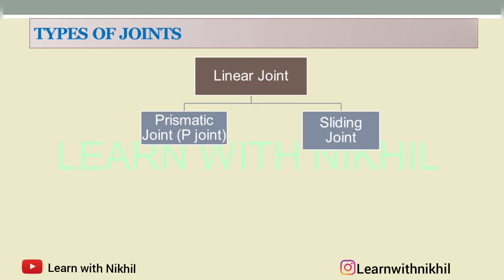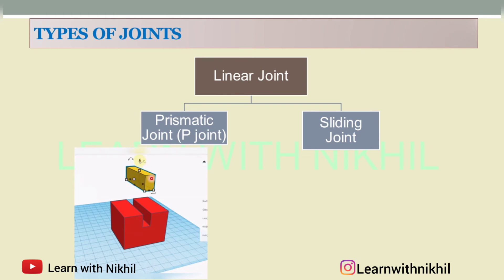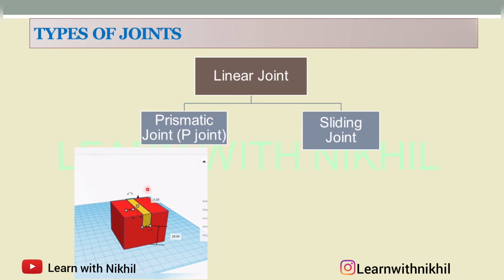The first type of joint is the linear joint, also called the straight joint. The linear joint is further classified into the prismatic joint, also known as the P joint, and the sliding joint. Now, what is the prismatic joint? From this GIF you'll be able to understand it better. This is one link and this is the other link — this can be considered as the input link and this as the output link. Between them, Joint 0 and Joint 1 are moving — perfectly fit into the joint. This is moving in a linear way, so this is the prismatic joint.